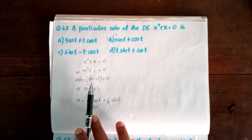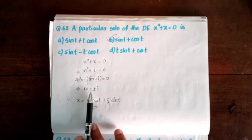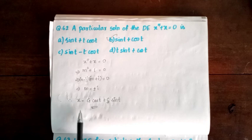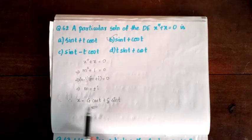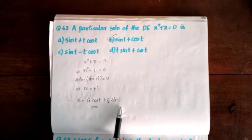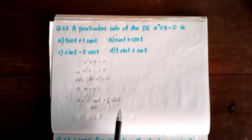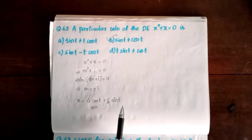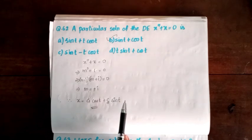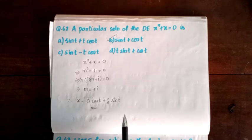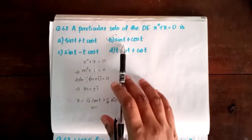Solving the quadratic, m equal to plus or minus i. Therefore the general solution is x equal to c₁cos(t) plus c₂sin(t). Setting c₁ and c₂ equal to 1 gives the particular solution x equal to cos(t) plus sin(t). Option B is correct.